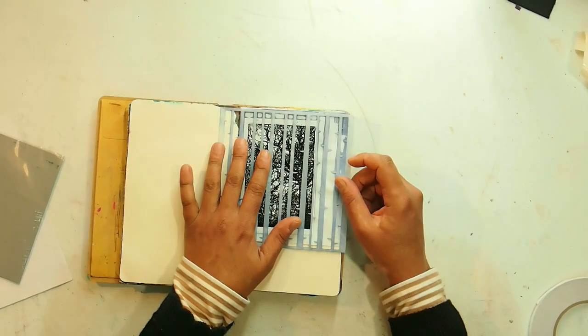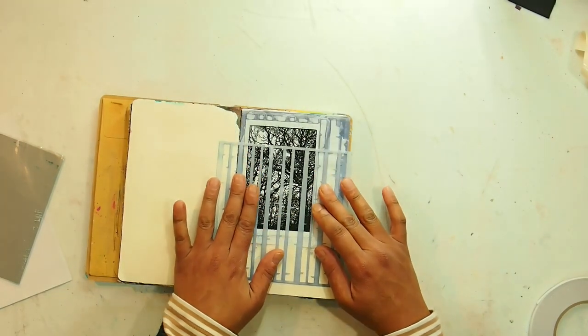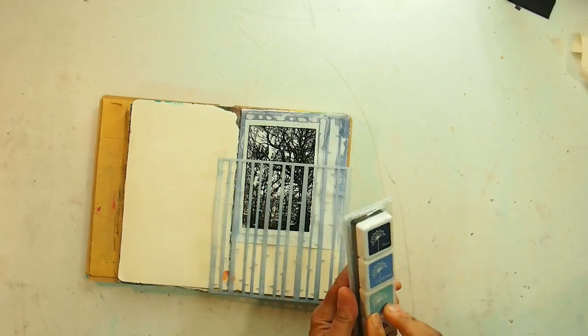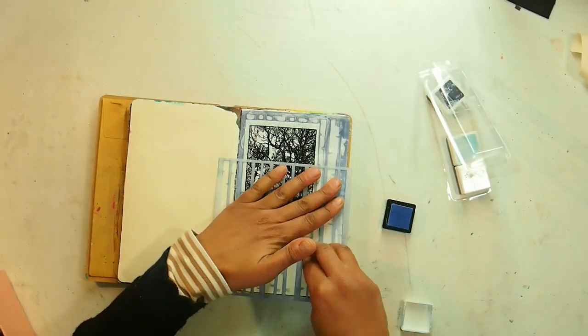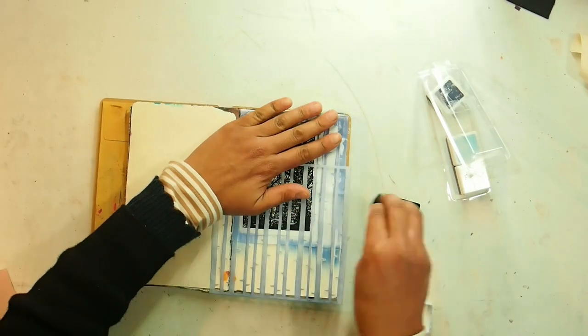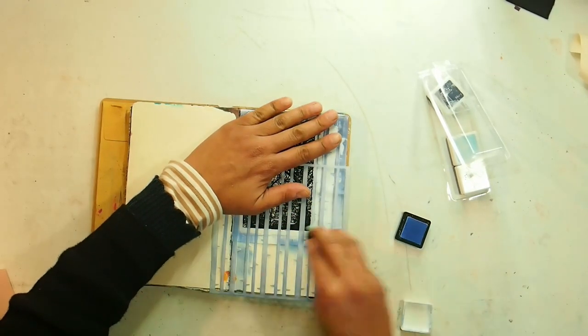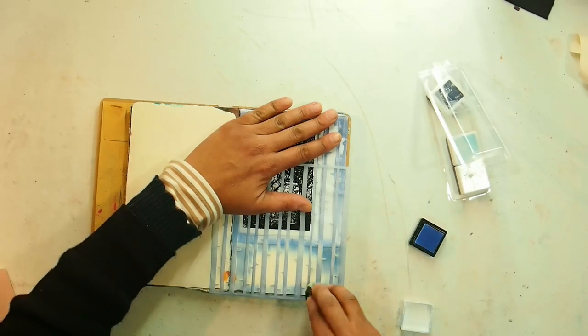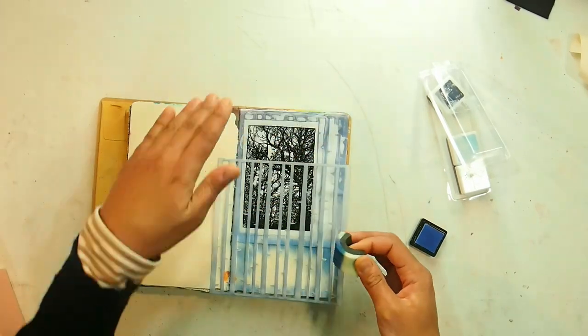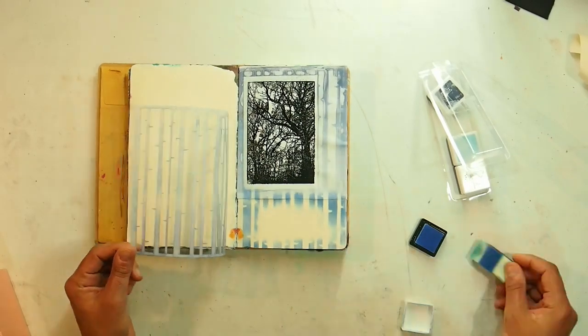I then go ahead and grab the stencil again and I line it up and I stick it down. I then reach for the Hero Arts ink cubes. I go for the second darkest which is the cornflower and with my little dauber I create a little window where I'm going to put a sentiment. I'm going over the division between the background paper and the art journal.